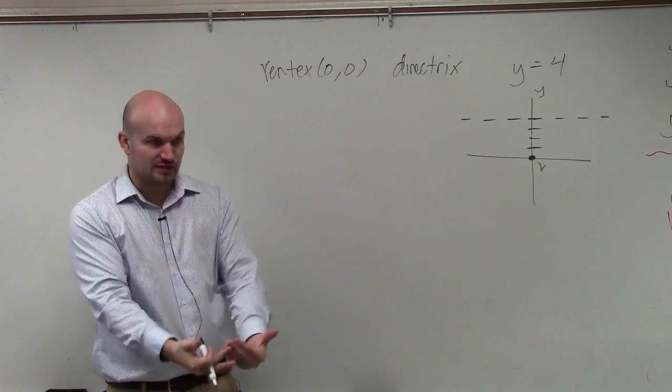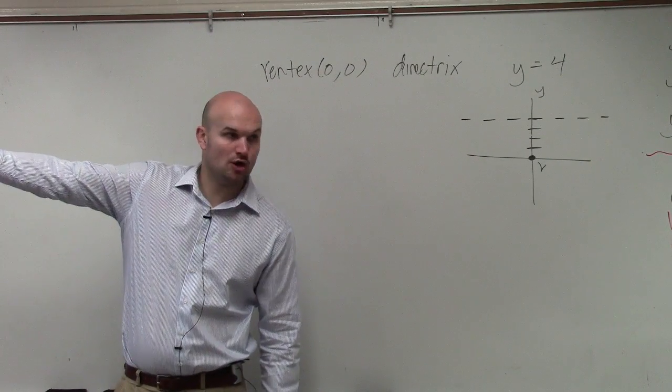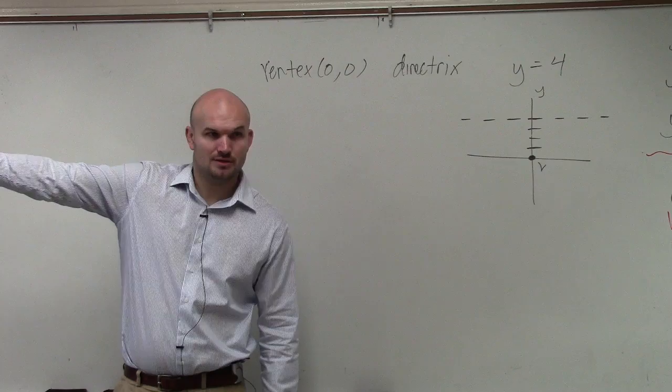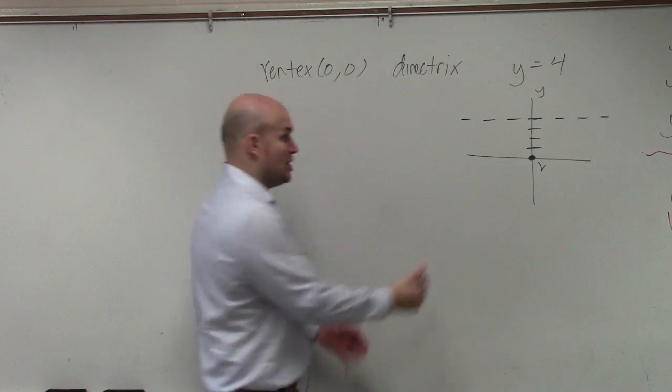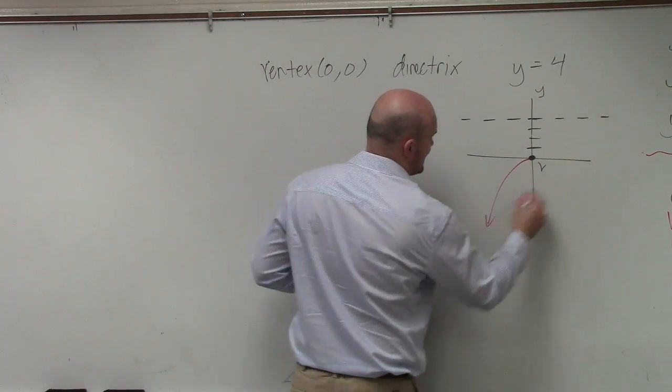So now we know that we have a vertex. We know we have a directrix. Does our parabola open up towards its directrix? No. So we know the graph is going to be opening down.